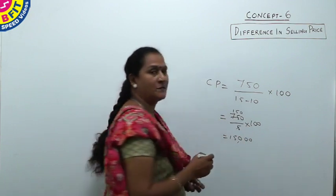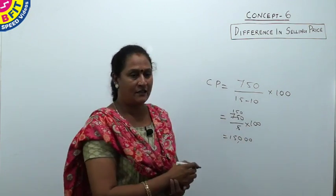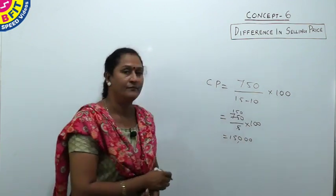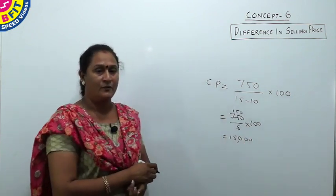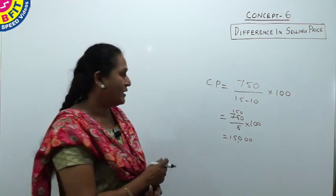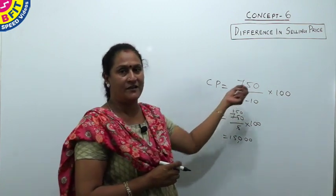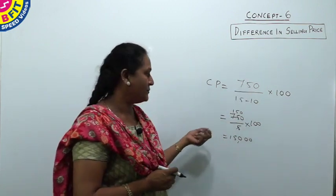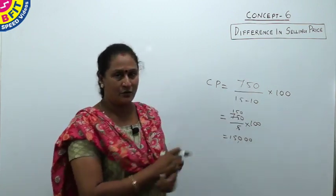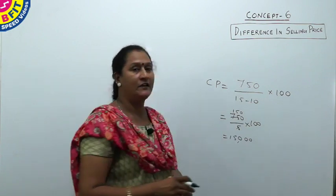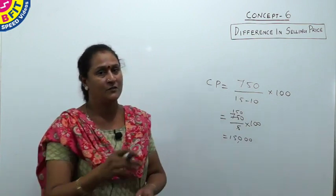The cost price of the article is 15,000. By dividing the difference in selling price (750) by the difference in profit percent (5) and multiplying by 100, we have obtained the cost price directly.